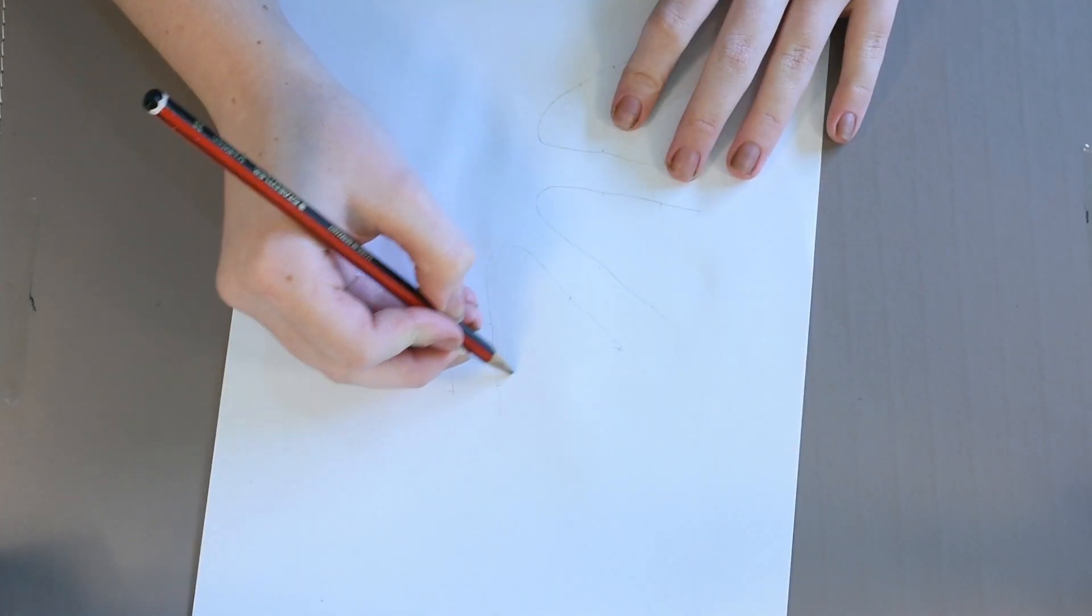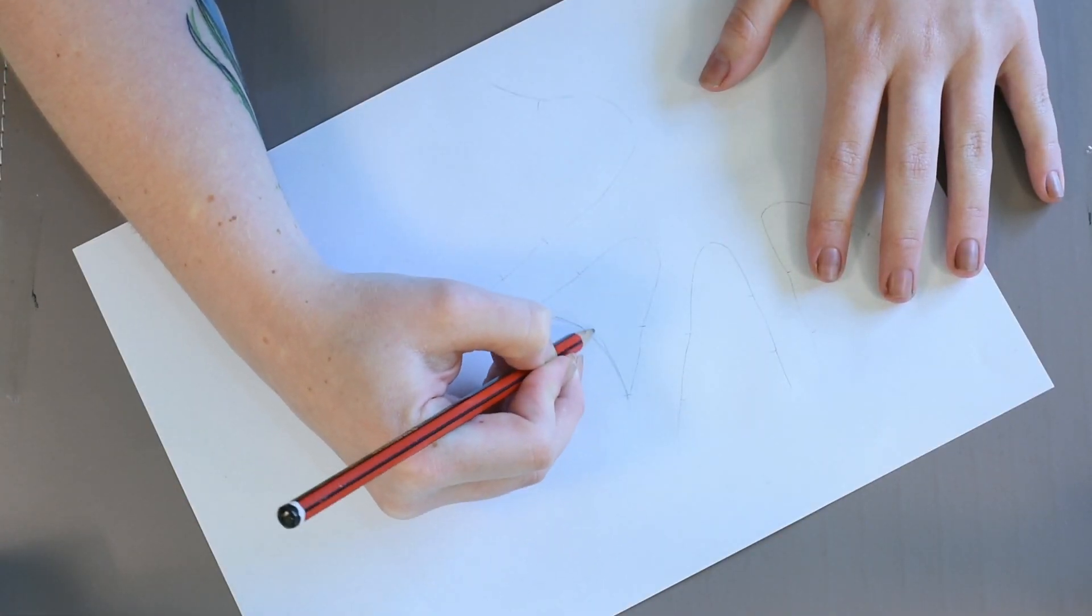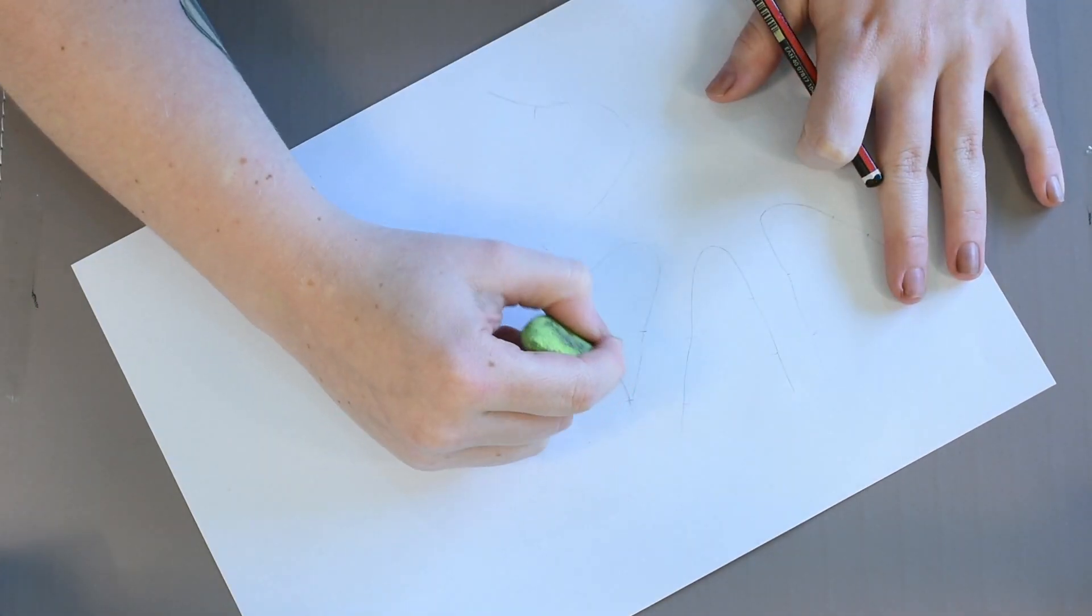You want to use a pencil to do this. It will make it so you can rub the markings off later. While doing this, you also want to mark each of your knuckles.